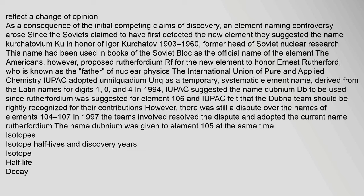In 1994, IUPAC suggested the name Dubnium (Db) to be used since Rutherfordium was suggested for element 106 and IUPAC felt that the Dubna team should be rightly recognized for their contributions. However, there was still a dispute over the names of elements 104–107. In 1997 the teams involved resolved the dispute and adopted the current name Rutherfordium. The name Dubnium was given to element 105 at the same time.